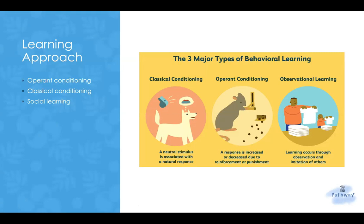There are three main areas in this perspective. One is operant conditioning, which is learning by the consequences of our behavior. The second is classical conditioning, which is learning through association. And lastly is social learning, or learning through observation, imitation, and modeling — we also call it observational learning.